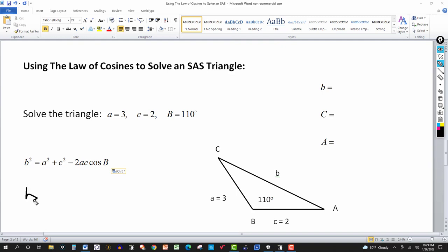So this should be then b² equals a². And a is 3, so that will be 9. And c² where c is 2, so 2² is 4, minus 2 times a times c. So multiply a and c here, we get 6 times minus 2, that's minus 12 there. And it's the cosine of B, which is given to be 110 degrees.